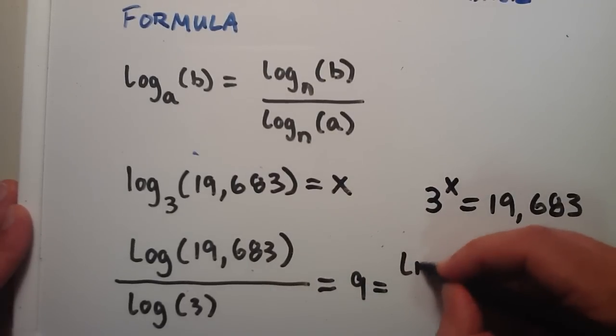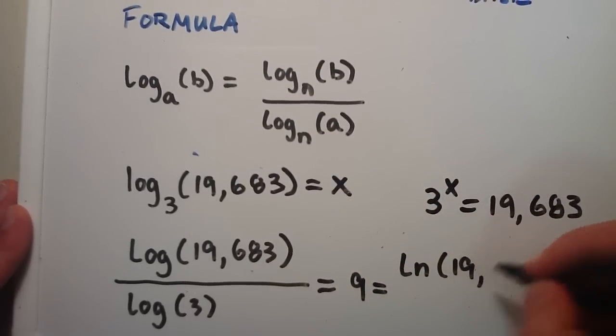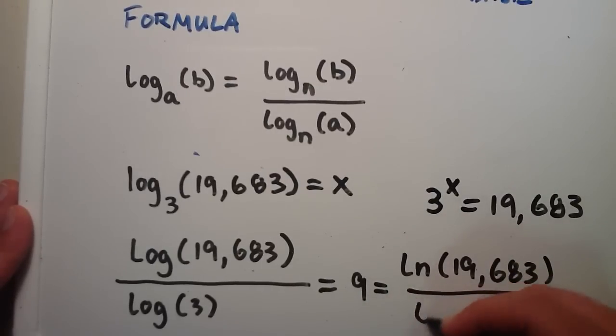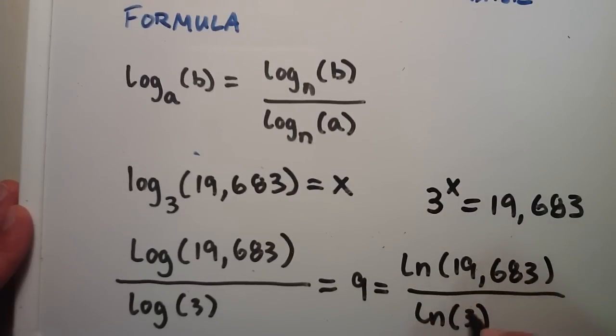And we can also do the natural log of 19,683 divided by the natural log of 3. Plug this into our calculator and we find out that the answer is 9.